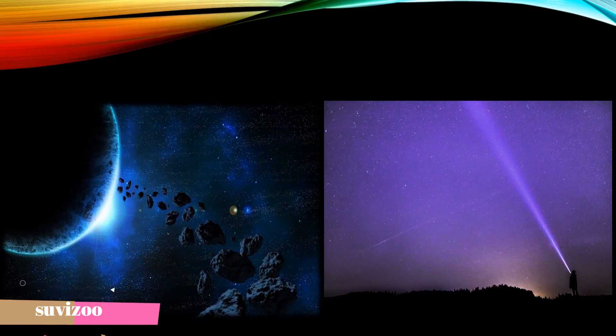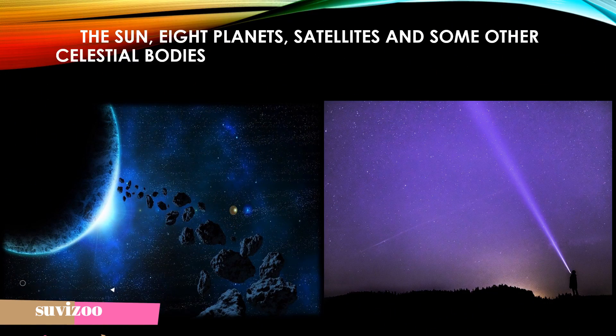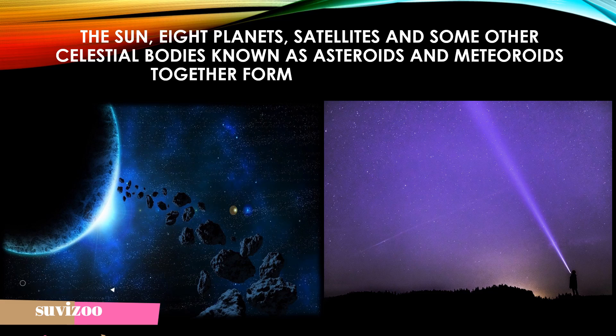The sun, eight planets, satellites, and some other celestial bodies known as asteroids and meteoroids together form our solar system.